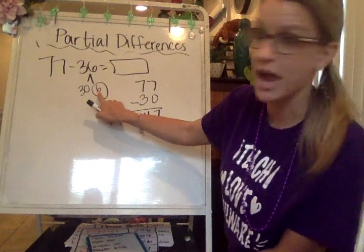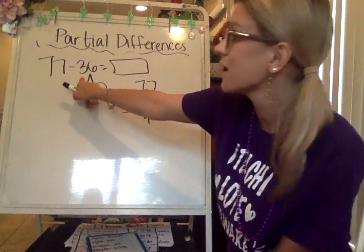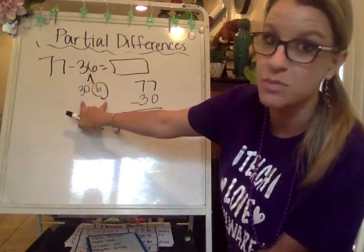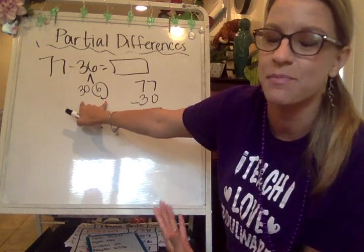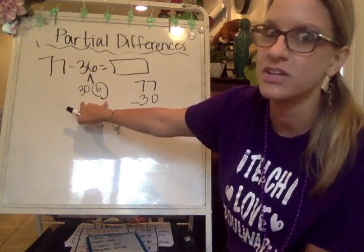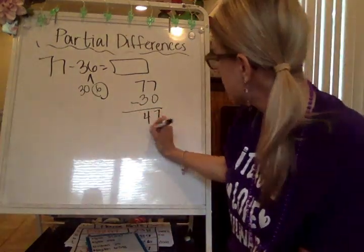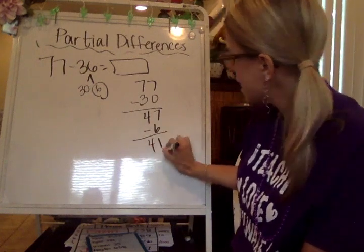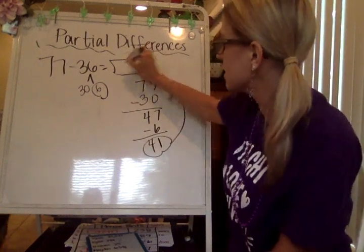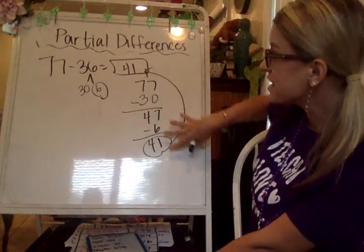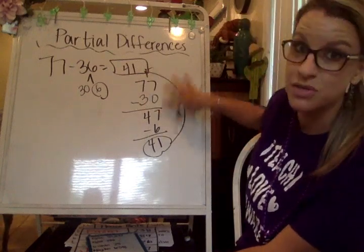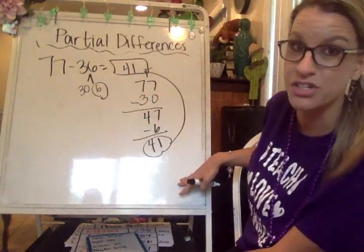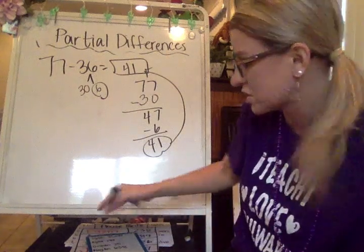Now I have to subtract the 6. My total that I'm subtracting is 36 — I'm just breaking it into two smaller pieces in order to find the difference using partial differences. So now I'm subtracting 6, and 41 is going to be the difference. I'm breaking it into smaller steps and that's how you do partial differences.